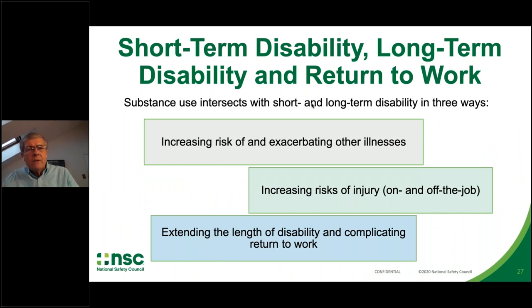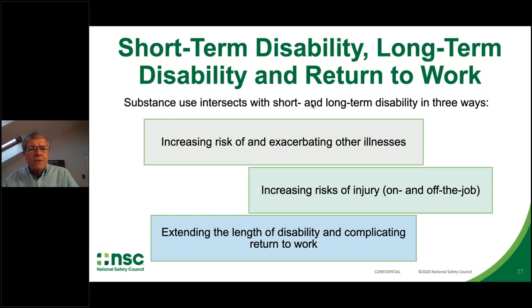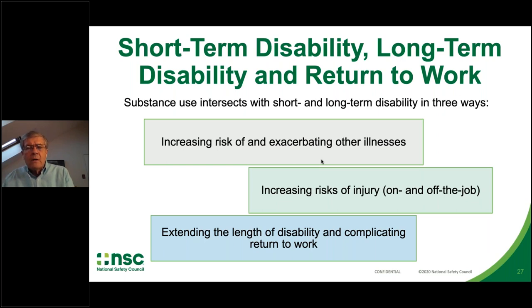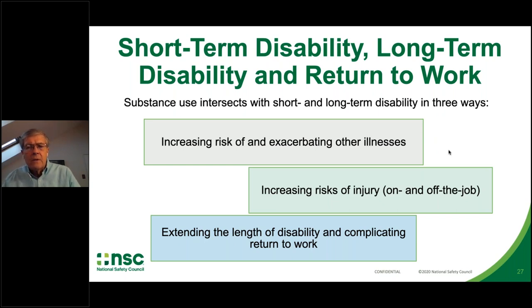Short-term disability, long-term disability, and return to work are also covered in a detailed issue brief. We find that substance use increases the risk of and exacerbates other illnesses — particularly alcohol, which is associated with about 58 diagnoses of illnesses and injury. Alcohol in particular also increases the risk of injury both on and off the job. Substance use extends the length of disabilities and complicates return to work.